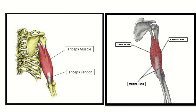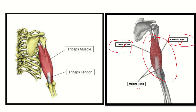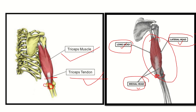Here we can see the posterior or extensor aspect of the arm, and here is one of the muscles. This muscle has three heads — a long head and a lateral head medially — so it has three shapes. From this, the name of the muscle is triceps. Here we can see the triceps muscle and its tendon, along with the olecranon process. The injury occurred approximately two centimeters proximal to the olecranon process, right at this tendon.